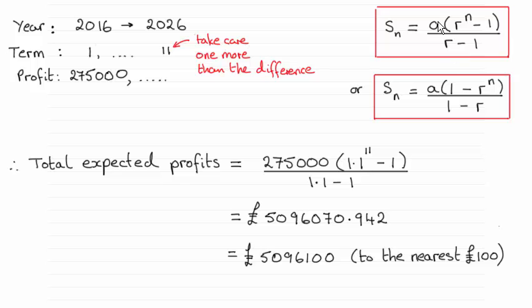So using this formula, you can see we've got a, the first term 275,000, multiplied by the common ratio 1.1 to the power n. n is 11. You've got to take care on this one. As I pointed out in the previous video, if you take away these two numbers from one another, you're going to get 10.